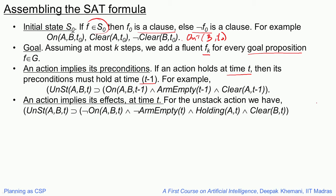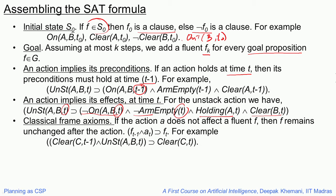The difference is that now we are writing this as a formula in propositional logic. Action implies its effects similarly: if you unstack a from b, then not-on-a-b will be true at time t, the arm is no longer empty at time t, you are holding a at time t, and b has become clear. Then you add the classical frame axioms: if an action does not affect a fluent f, then f remains unchanged after the action. For example, if c was clear at time t minus 1 and you are unstacking a from b, then c must be clear at time t.